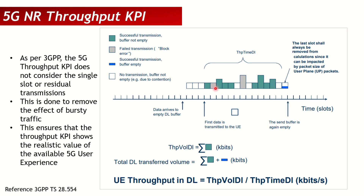The green box indicates a slot which has actual data volume in it. The gray box indicates a retransmission slot — meaning the gNodeB previously sent data the UE could not decode, so it's being retransmitted. A white slot is an empty slot. The blue slot is the last slot where the gNodeB buffer went empty, and it is not used in the throughput calculation.